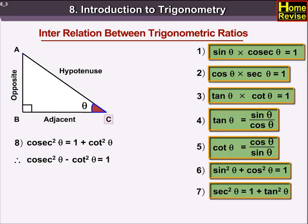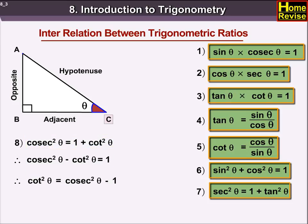Cosec squared theta minus cot squared theta is equal to 1. Also, cot squared theta is equal to cosec squared theta minus 1.